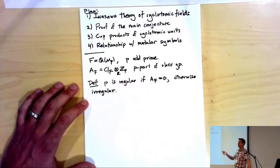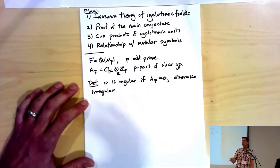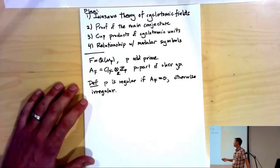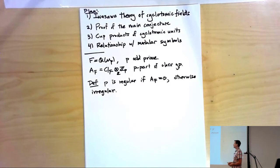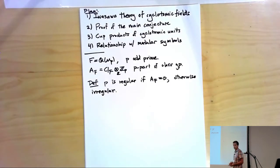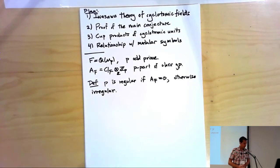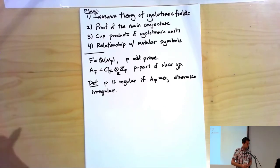For example, the smallest irregular prime is 37. It's known there are infinitely many irregular primes, but not known that there are infinitely many regular primes, although there should be.